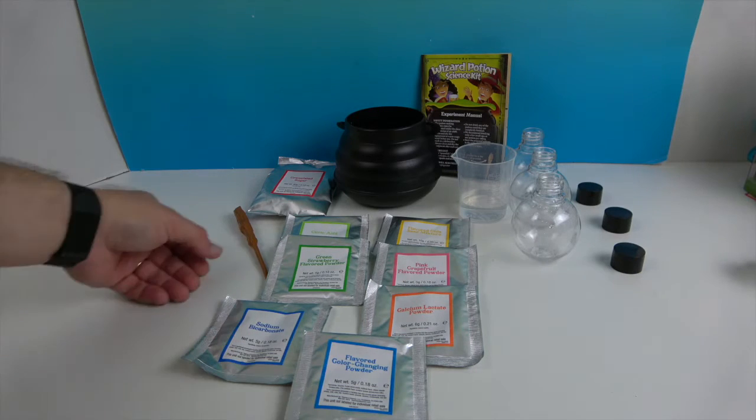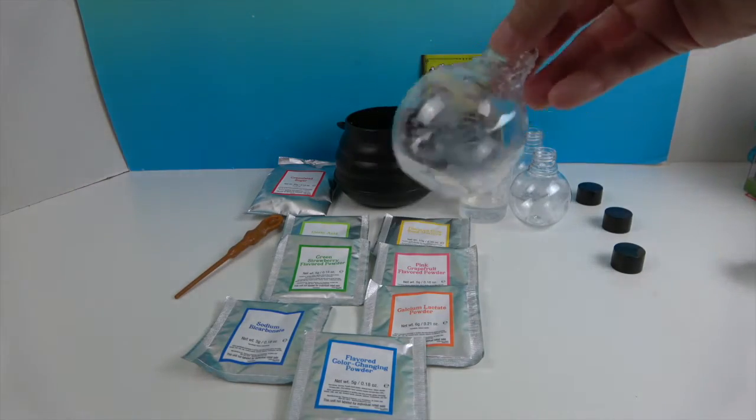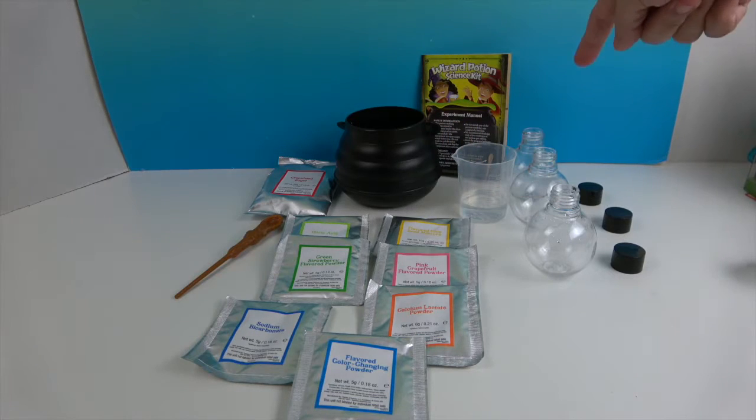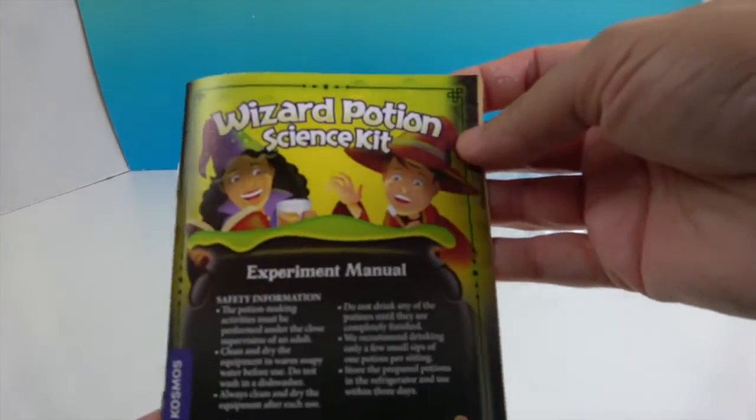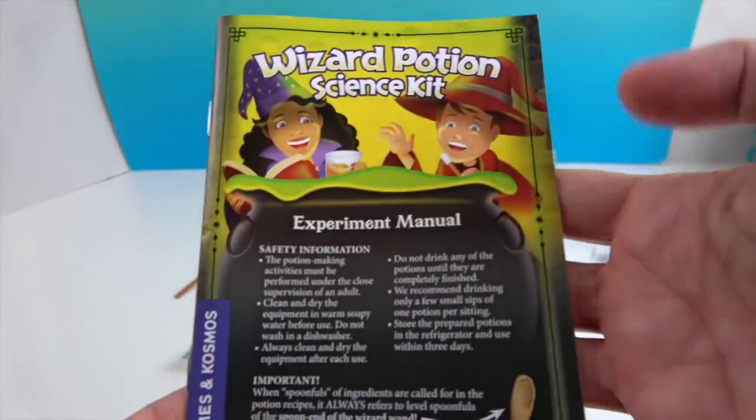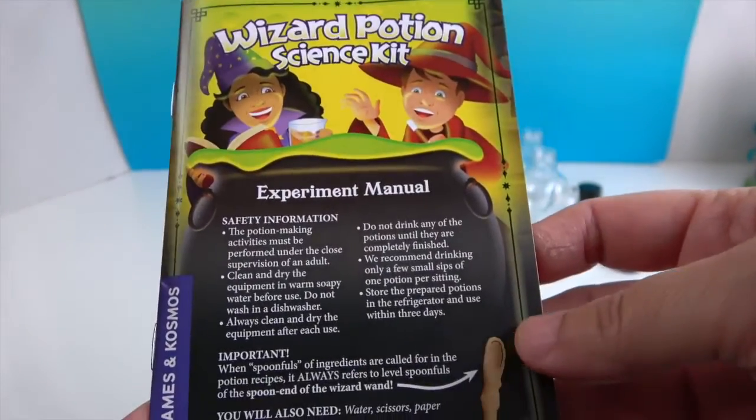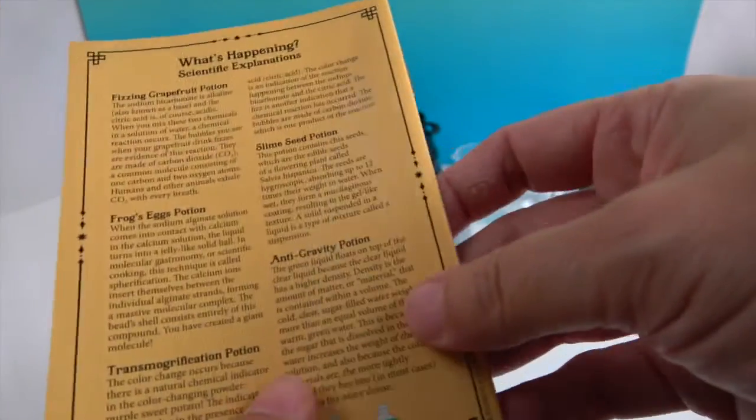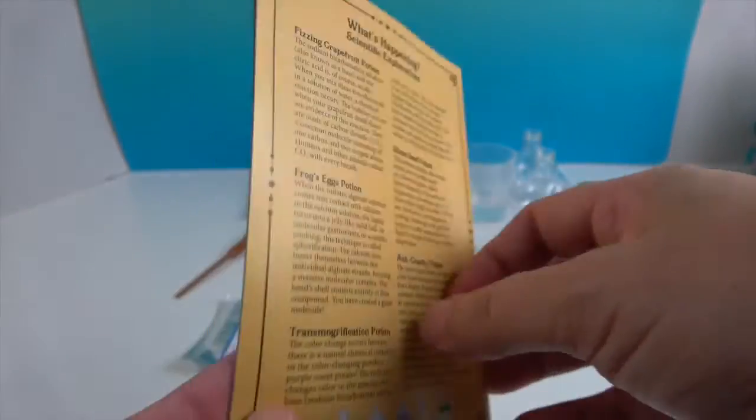We have eight little packets of stuff, our spoon, our cauldron in the back, and our little flasks. I've washed that out and I've washed these out because obviously we're making something to drink. We have our wizard potion science kit. This will tell you all you need to know about building the potions as well as a really cool story, and on the back it tells you the reasons that the potions do the things they do scientifically.